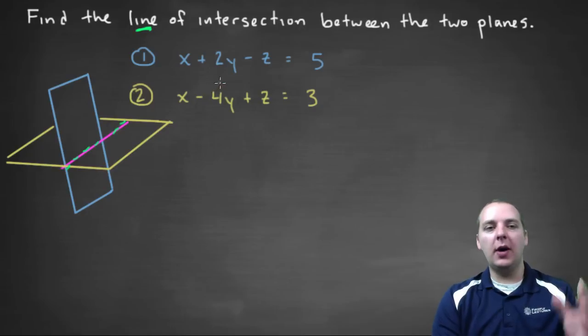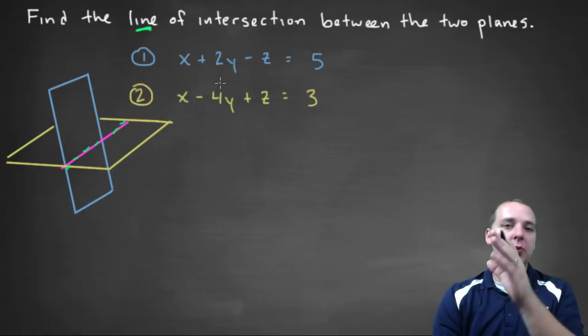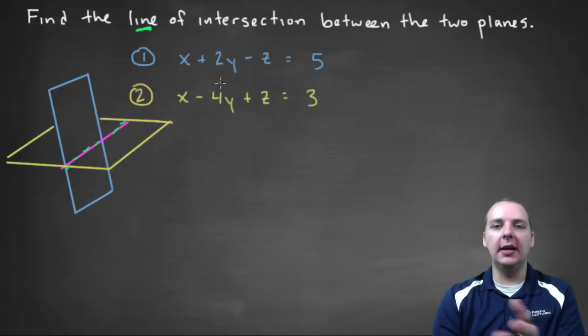then we can take the x and the y and the z equations, and change one of those y values, let's say to a t, in terms of a parameter. And so then they're all in terms of the same parameter. So if that's unclear, don't worry about it, you'll see where we're going as we kind of work through an example.